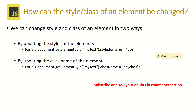How can the style or class of an element be changed? We can update it in two ways. First, we can change the style properties using document.getElementById(), provide the id of the element, followed by .style.fontSize — here we are changing the font size using the style attribute. Alternatively, you can assign the class name of the element using .className equal to any class. So you can update either by providing a style or by providing the class name.